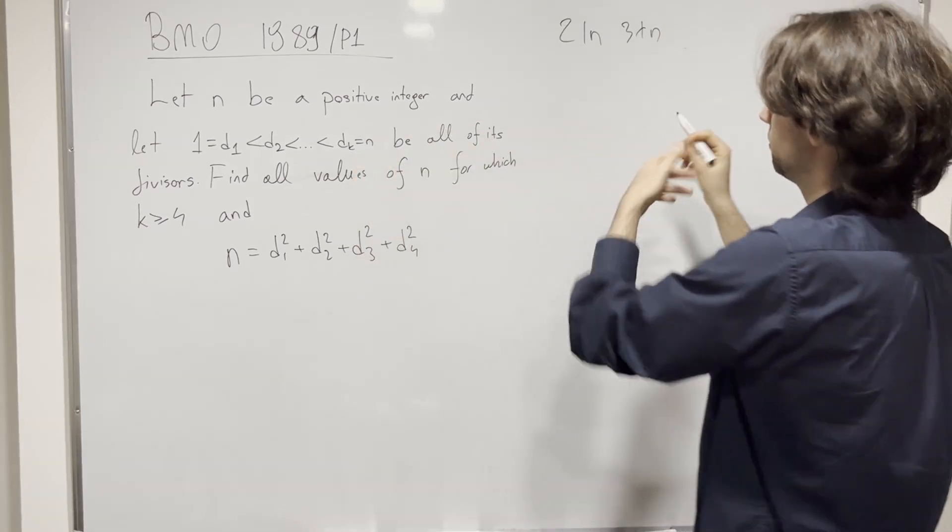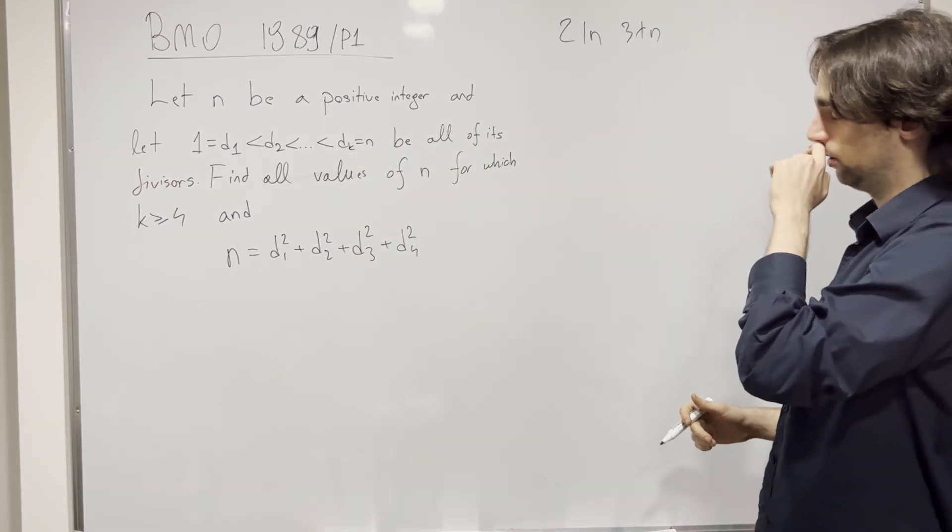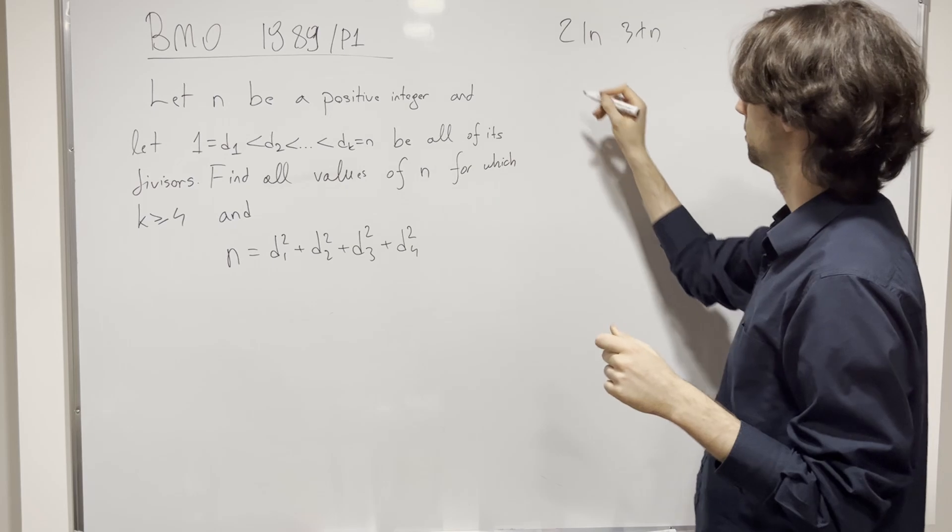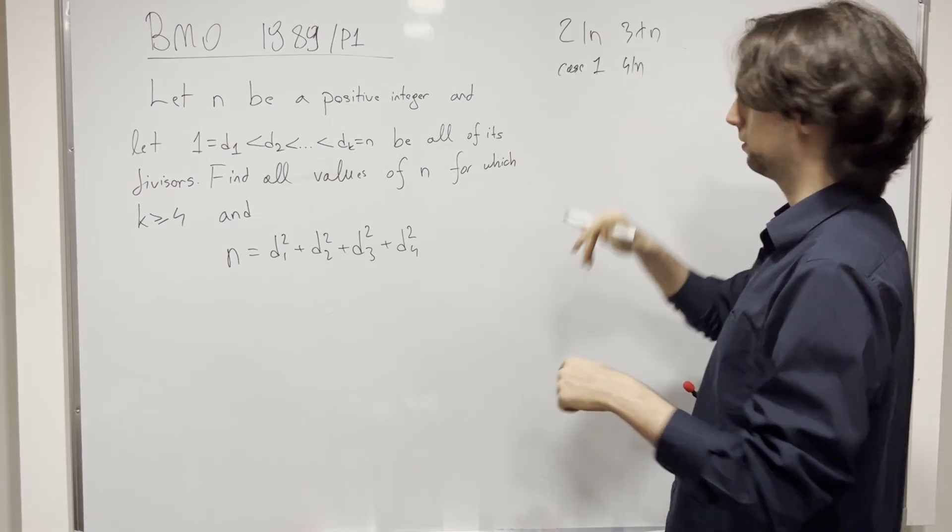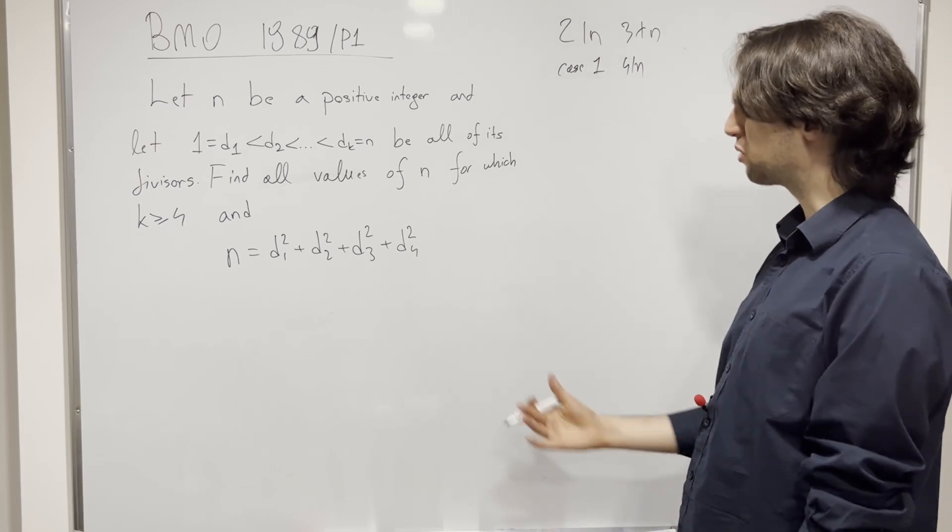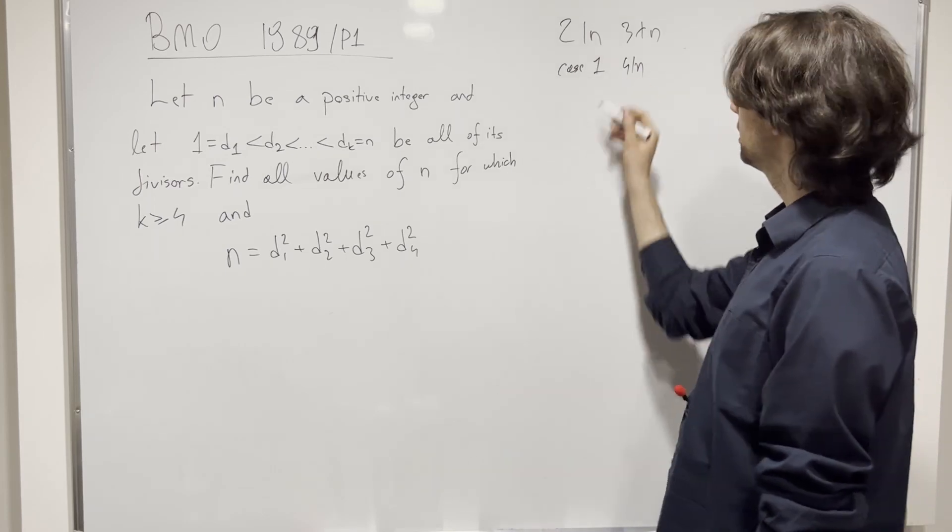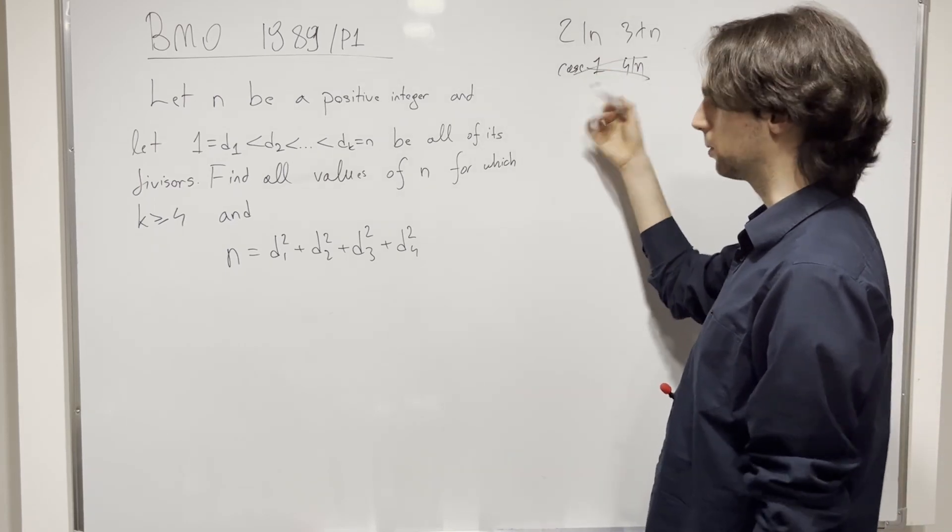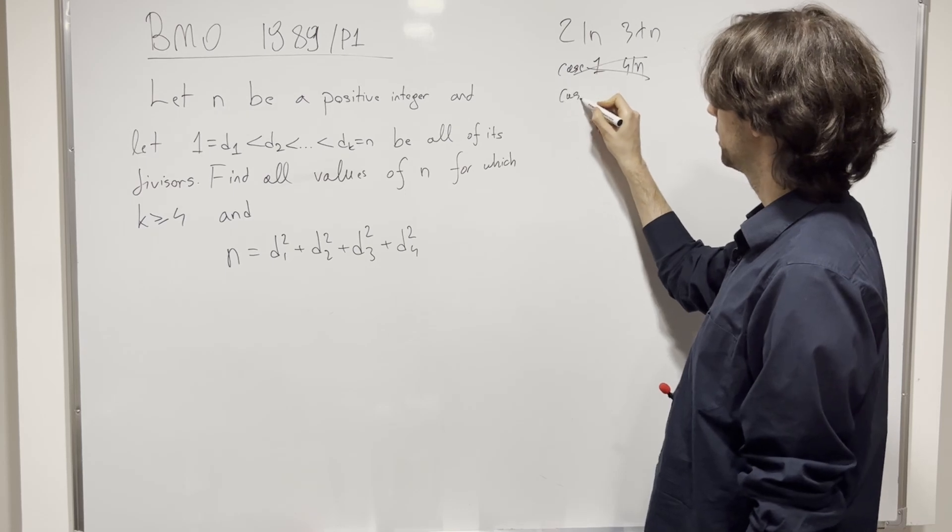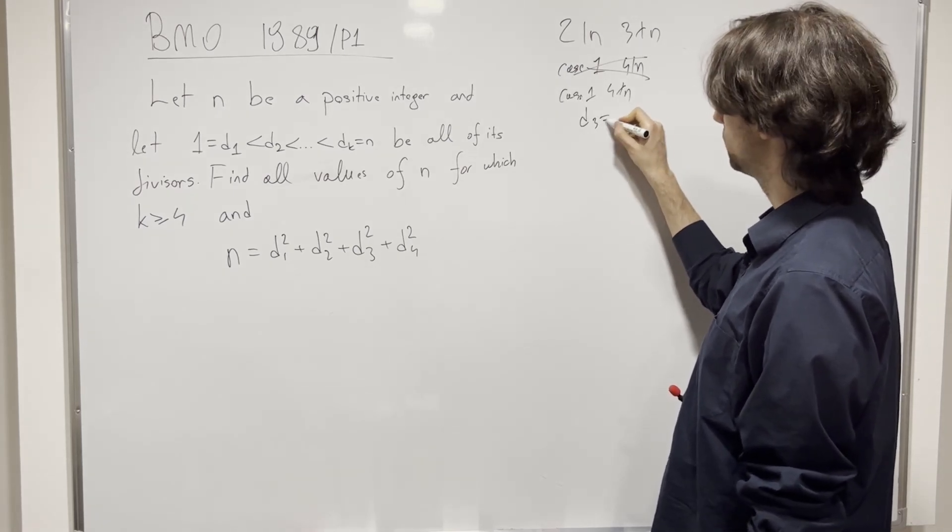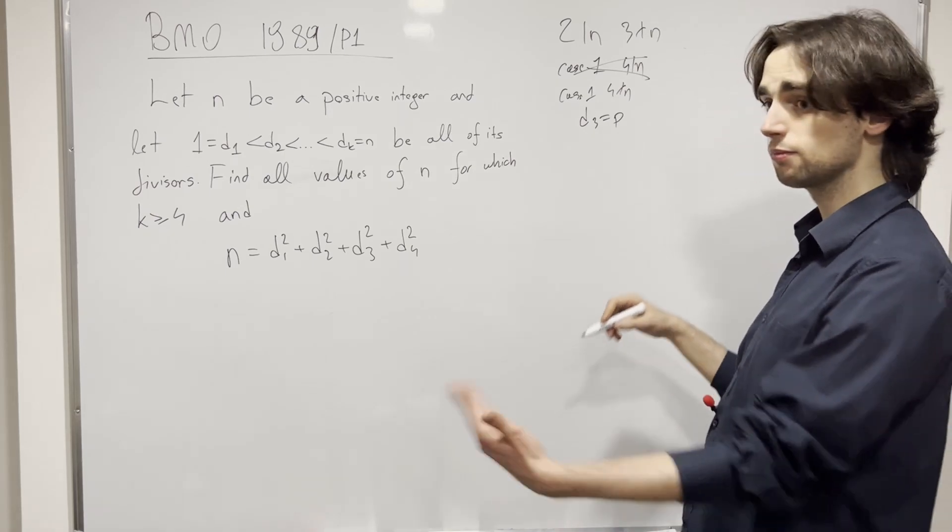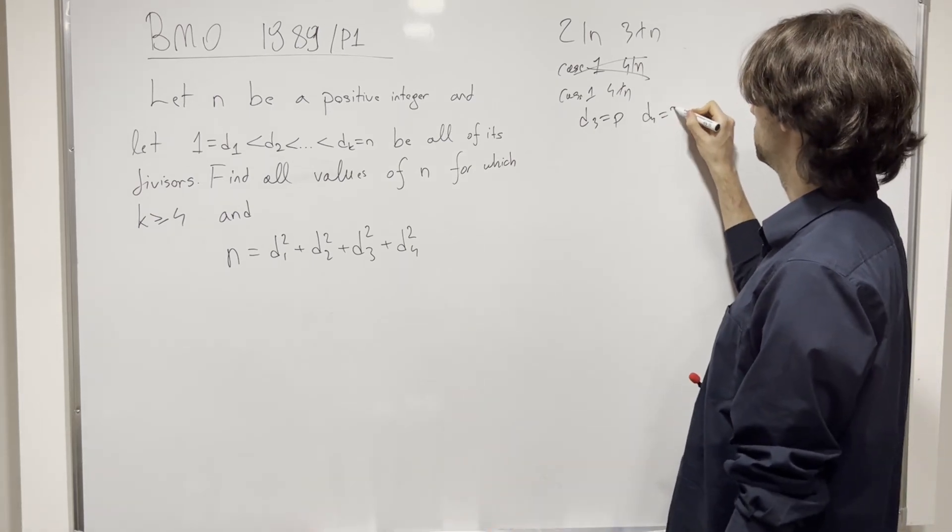So, the first case, for me, would be to say, okay, let's say we have case where, case 1, 4 divides n. Or actually, maybe the prime case would be quicker. Let's actually not do this case. Let's say 4 doesn't divide n, case 1, 4 does not divide n, and then we have d3 is equal to some prime p, and d4 has to be equal to 2p.